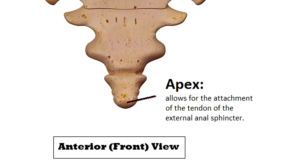Finally we have the apex, which is the inferior end of the coccyx bone. The word apex means something that forms a point, and the end of the coccyx is kind of rounded at the tip but still comes to somewhat of a point when you look at the overall bone because it is triangular in shape. This apex allows for the attachment of the tendon of the external anal sphincter, and the very tip can sometimes be split in some people.